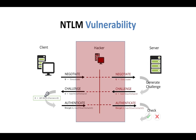The hacker's server shares that challenge ID with the genuine client. The client generates a hash, encrypts the challenge ID with its password hash, and sends it back to the hacker's NTLM server. Now the hacker has the client's username and password hash. The hacker's client then sends these to the genuine server for authentication.